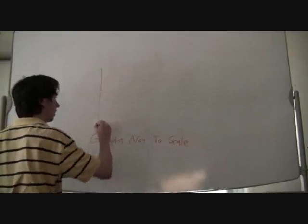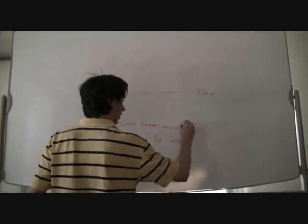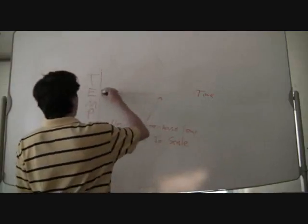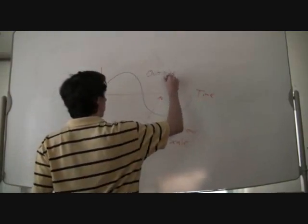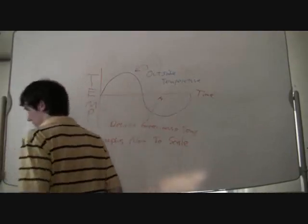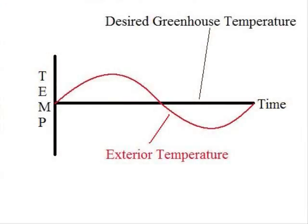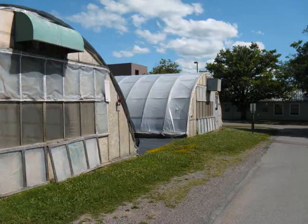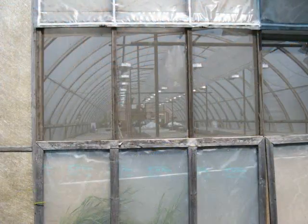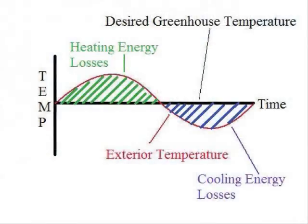Let's go to the blackboard. Contrary to how they are popularly portrayed, greenhouses do not function to keep plants warm. Rather, they function to keep plants at a specific temperature that is considered desirable for plant growth, eliminating both high and low extremes. We can represent that on a graph of temperature against time, where the x-axis represents the desired interior greenhouse temperature. The simplest possible CEA greenhouse is just an enclosure that contains the plants as well as any other equipment required for the plants to survive. Since we're focusing on temperature here, we'll say that that's simply a heating and a cooling unit to deal with high and low extremes.